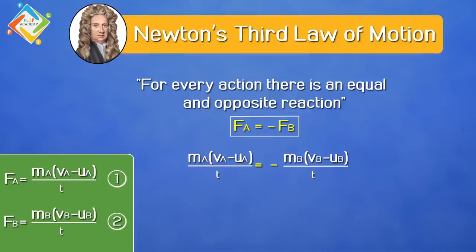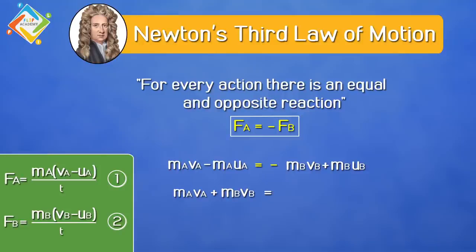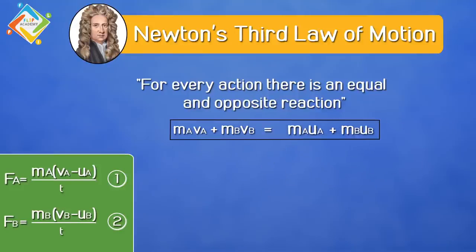From both sides of the equation, t gets cancelled out. Opening the brackets on the left-hand side gives mA·vA − mA·uA, and on the right-hand side it becomes −mB·vB + mB·uB. On rearranging both sides, we get mA·vA + mB·vB on the left-hand side, and mA·uA + mB·uB on the right-hand side.